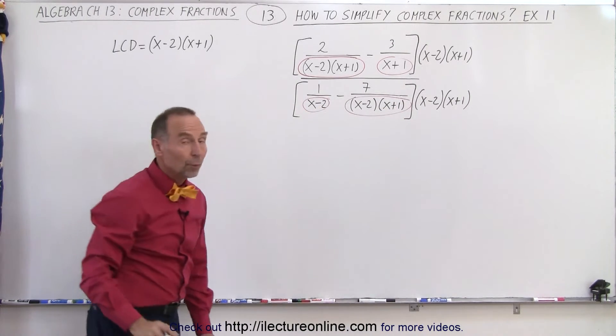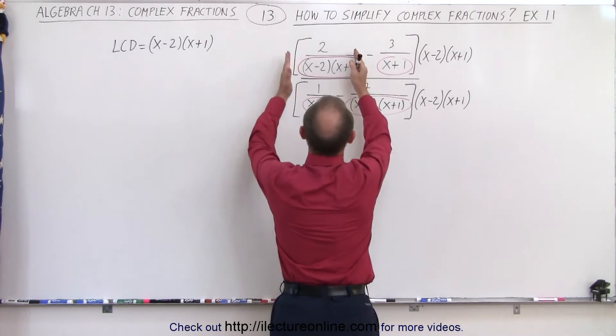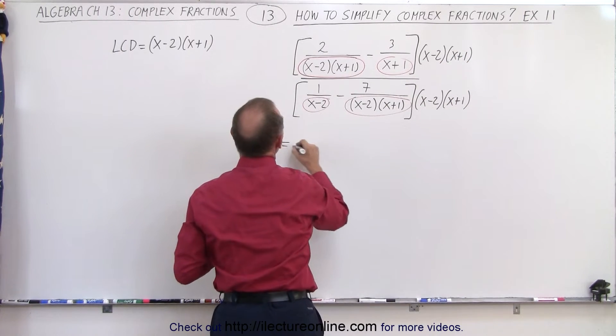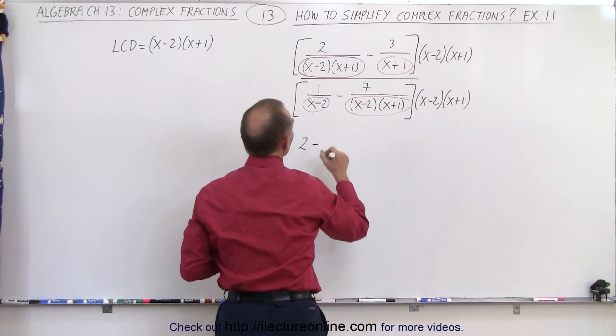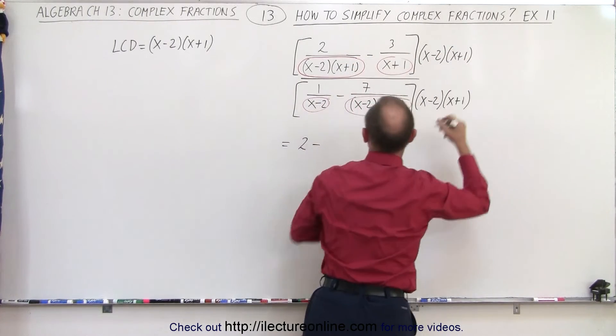When we multiply, notice if we multiply this times this, both x minus 2 and x plus 1 cancel out, and we're left with simply just a 2 minus. In this case, the x plus 1 cancels out, and we have 3 times x minus 2.